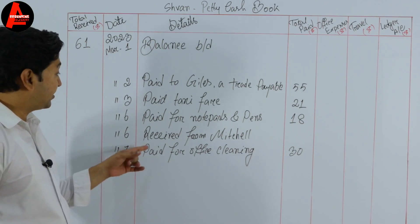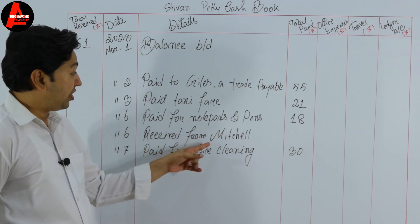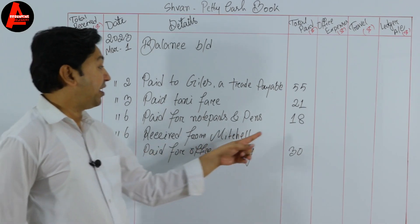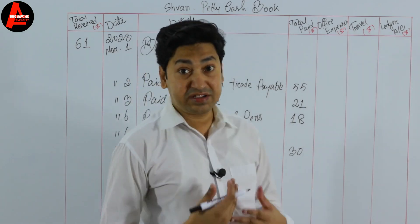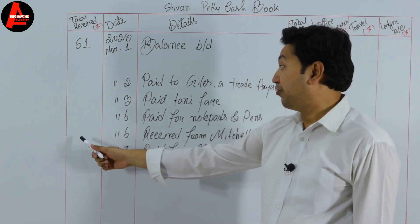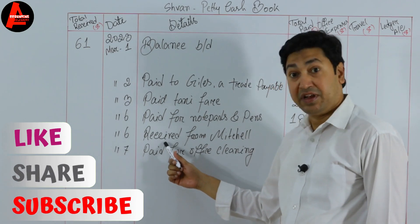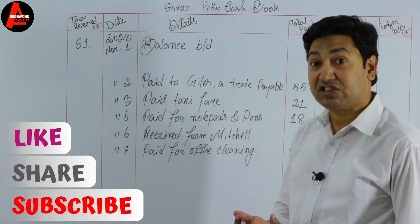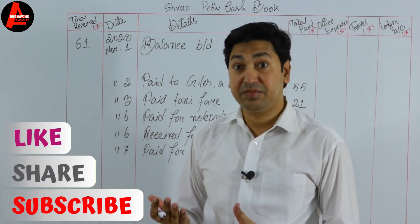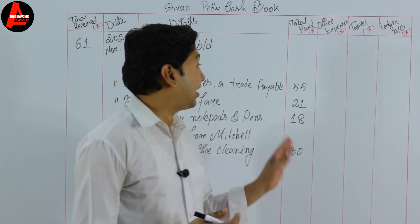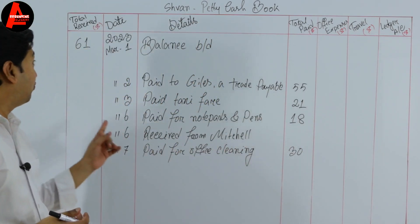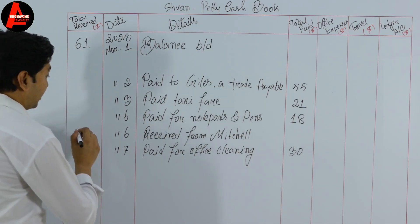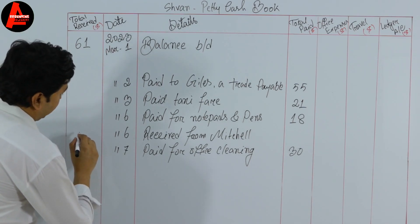Transaction 6 — received from Michael — is not a payment, so the amount will not go in the total paid column or the analysis columns. Because it is received, not paid, it is income, not an expense. It will appear on the receipts column. The amount for transaction 6 is $25, so we write $25 on the receipt column.